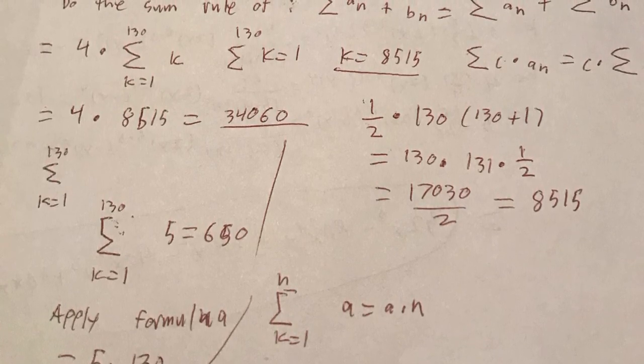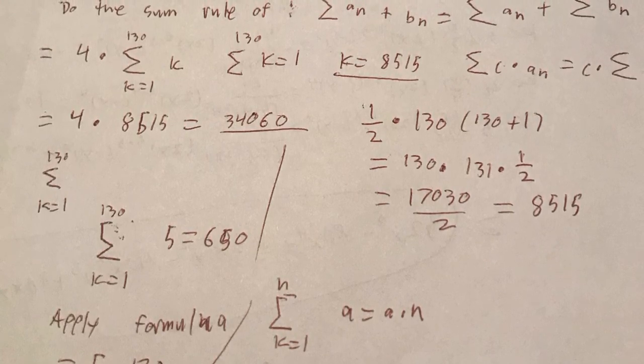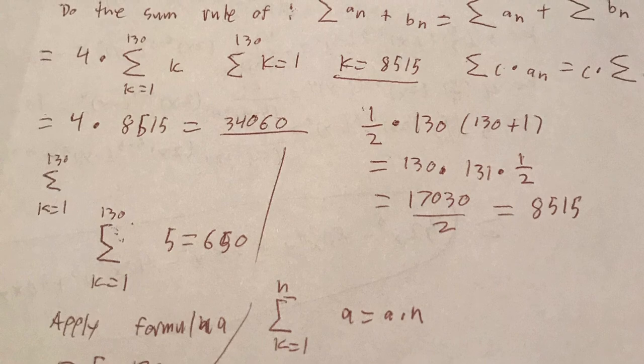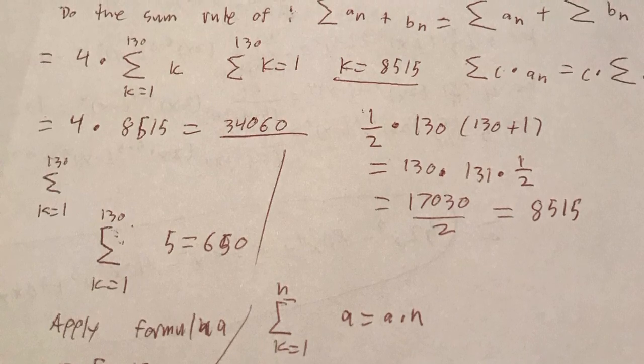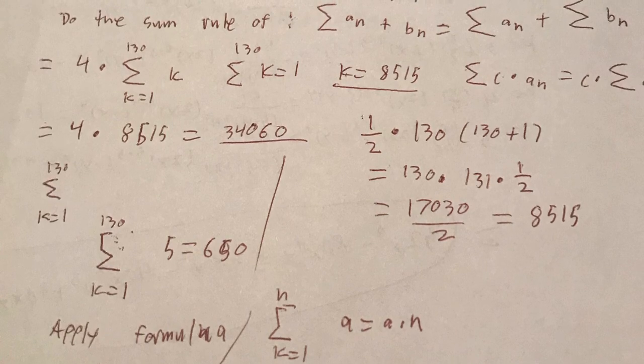And then we have the sum from k equals 1 to n. And we have 5 from our equation and we times that by 130 and that will be equal to 650.